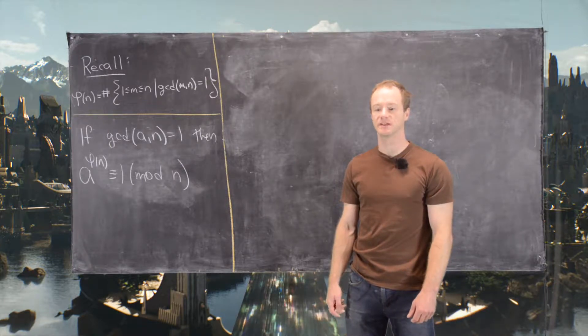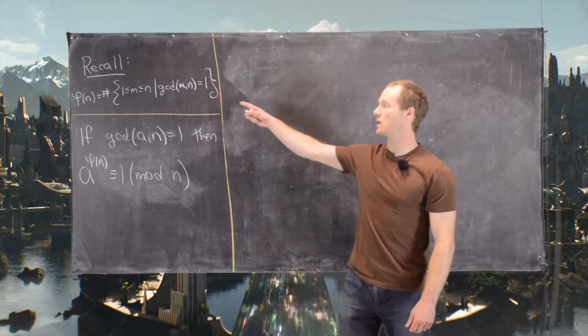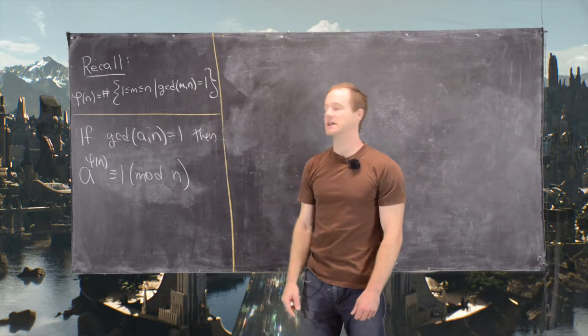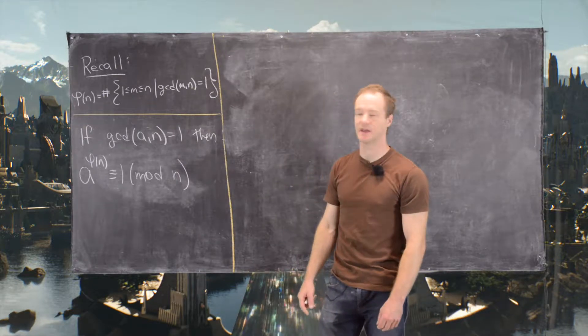In this video we're going to look at a couple of simple examples of Euler's theorem. Let's just recall that the Euler phi function is defined as follows: it's the number of positive integers between 1 and n that are relatively prime to n.